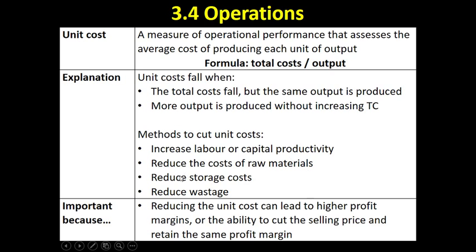Why is it important to cut the average cost of each unit? Two things. If we retain our selling price as it is and the cost of producing that unit has fallen, then we're going to increase our profit margin. On the other hand, if we cut our unit cost by, say, 10%, we may be able to reduce our selling price by 10% and retain the same profit margin — so we can become more competitive against other companies but still retain a profit margin. Hence why cutting unit costs is an important measure of operational performance.